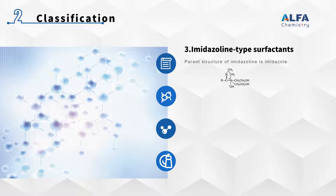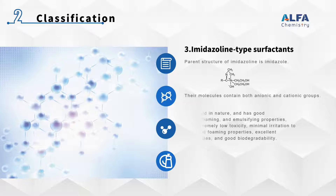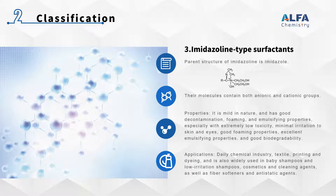The parent structure of imidazoline is imidazole, which reflects the molecular structure as a five-membered heterocyclic ring containing tertiary nitrogen and imin groups. Imidazoline-type surfactants are a class of surfactants with excellent performance. Their molecules contain both anionic and cationic groups. They are mild in nature, and have good decontamination, foaming, and emulsifying properties, especially with extremely low toxicity, minimal irritation to skin and eyes, good foaming properties, excellent emulsifying properties, and good biodegradability. They have very wide application prospects in the daily chemical industry, textile, printing and dyeing, and are also widely used in baby shampoos, low-irritation shampoos, cosmetics, cleaning agents, fiber softeners, and anti-static agents.